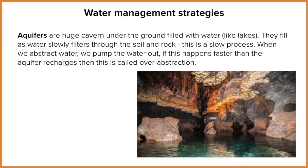Over abstraction is where we're using more water than is being put back into aquifers. Aquifers are giant underground reservoirs — they're naturally produced, in caverns underneath the ground. Water filtrates, so it moves through the soil and ends up in these large caverns. It's fresh in that it's not polluted; it's actually really clean because of all that filtration moving through the soil and stones.